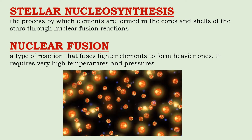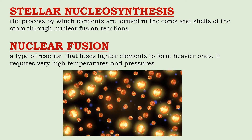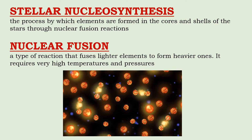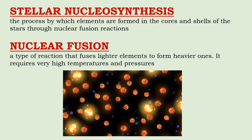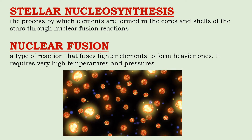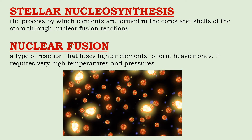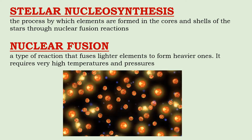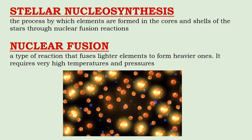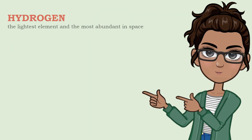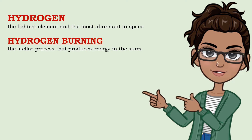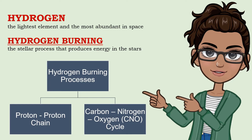Stellar nucleosynthesis is the process by which elements are formed in the cores and shells of the stars through nuclear fusion reactions. Nuclear fusion is a type of reaction that fuses lighter elements to form heavier ones. It requires very high temperatures and pressures. It is the reaction that fuels the stars, since stars have very high temperatures and pressures in their cores. Hydrogen is the lightest element and the most abundant in space. Thus, the formation of heavier elements starts with hydrogen. Hydrogen burning is the stellar process that produces energy in the stars. There are two dominant hydrogen burning processes: the proton-proton chain and the carbon-nitrogen-oxygen, or CNO, cycle.